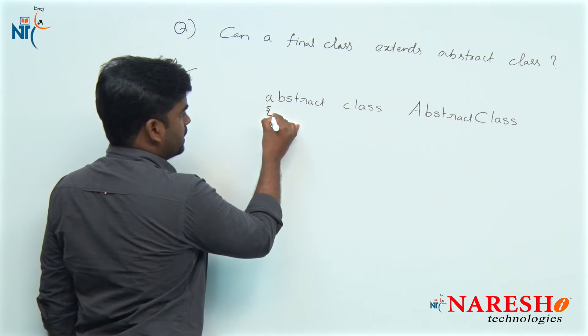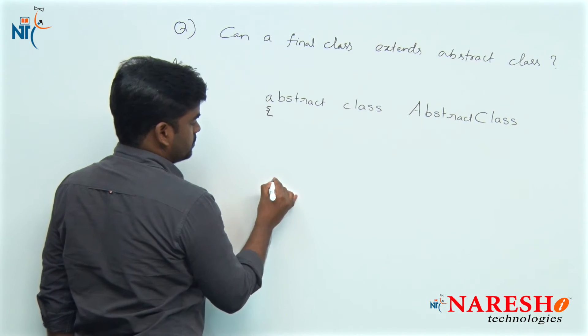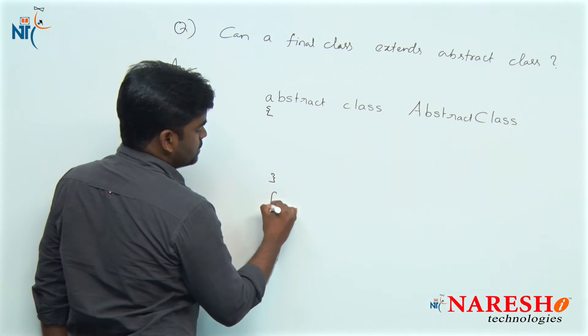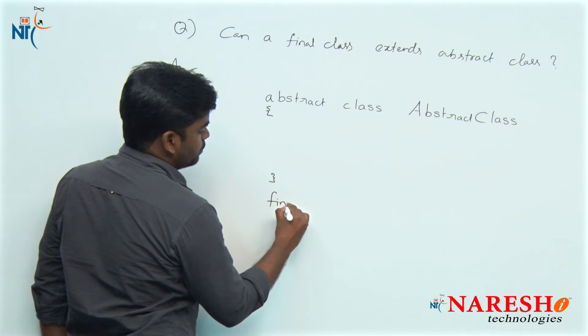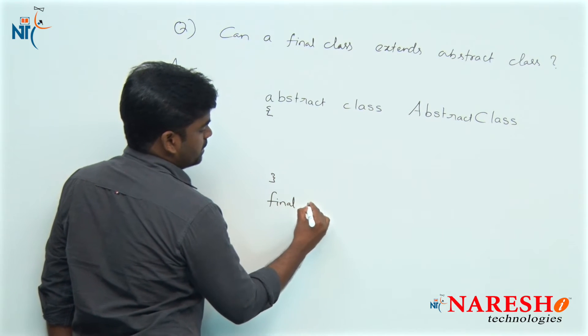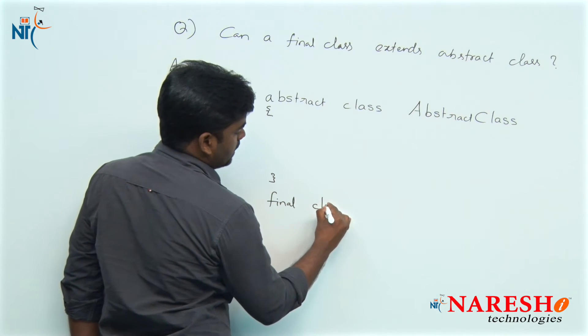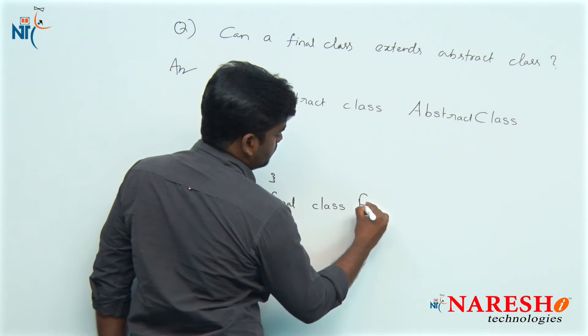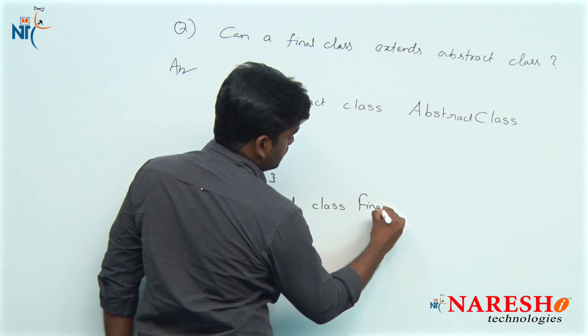This is the abstract class, and next we define the final class with the final modifier. The class name I am taking is final class only.